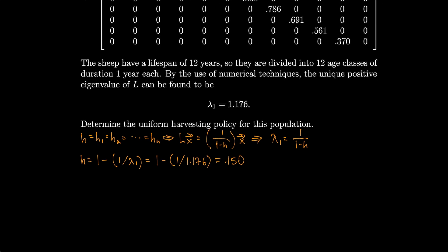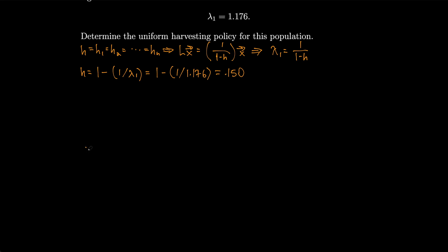Now we write out the population vector. Because (I minus H)L is itself a Leslie matrix, we use the same eigenvector formula: x equals [1, b1 divided by lambda_1, b1·b2 divided by lambda_1 squared, b1·b2·b3 divided by lambda_1 cubed, and so on] up through b1·b2···b_{n-1} divided by lambda_1^{n-1}.